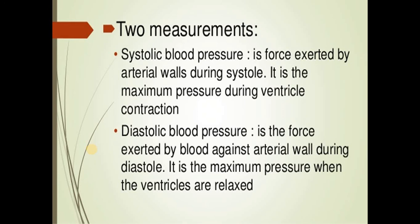Blood pressure is expressed as 120 over 80 mmHg, where 120 mmHg is systolic and 80 mmHg is diastolic. The range of blood pressure is different in different organisms and different mammals. Each has a different range of systolic and diastolic blood pressure.